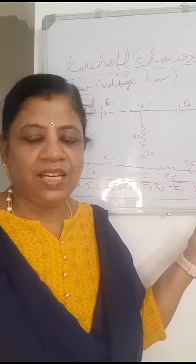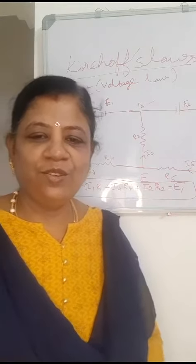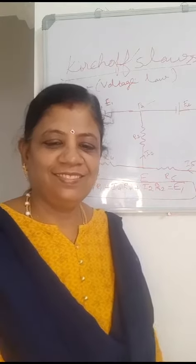For one closed network, take one current value and one resistance value, multiply and add the values. The sum of the product of current and resistance in each branch is equal to the total EMF in the circuit. This is Kirchhoff's Second Law.